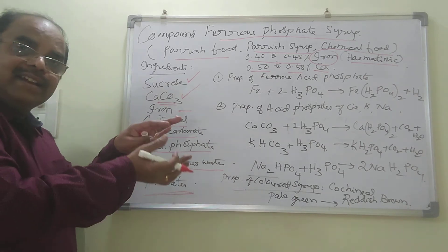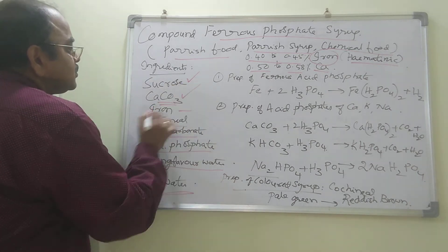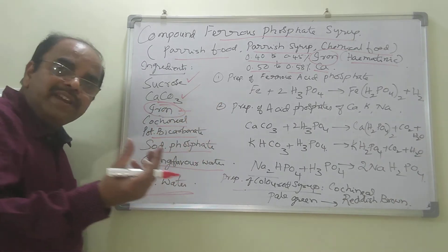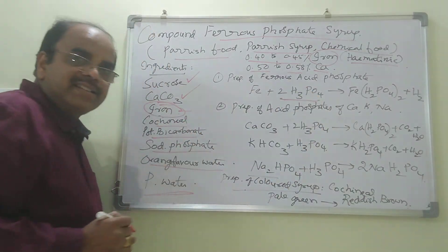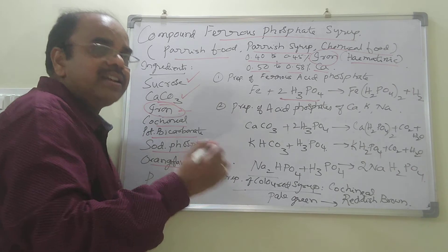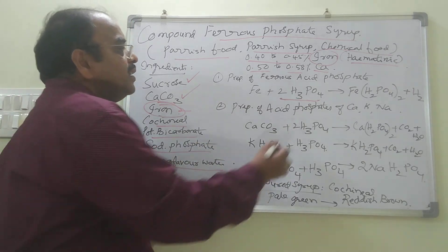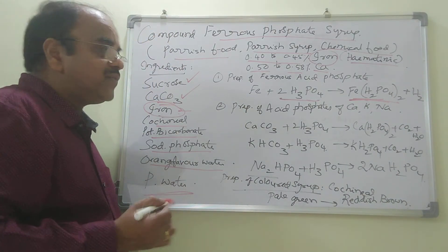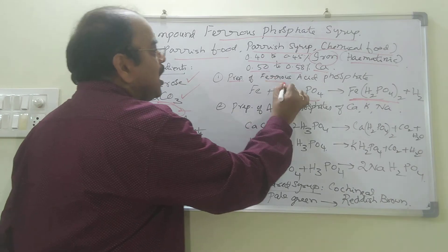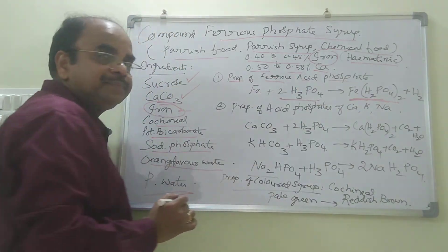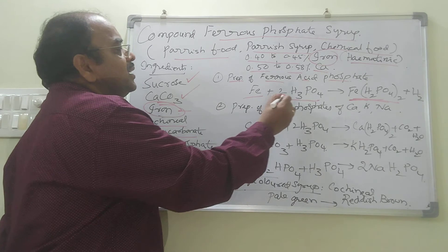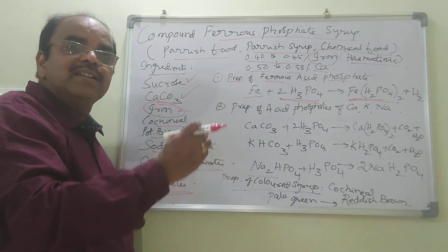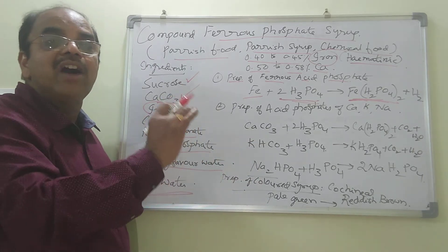The ingredients are divided into three groups. First, take iron in a small beaker, add phosphoric acid to the iron, and start heating. This forms ferrous acid phosphate. This is the first stage — preparation of ferrous acid phosphate. Here only iron is added to phosphoric acid, so there may be a little excess of phosphoric acid which is not fully consumed.